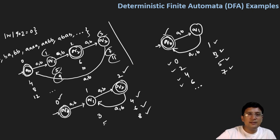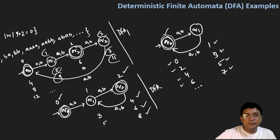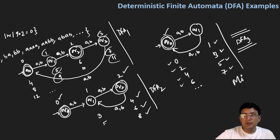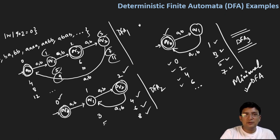So out of the three DFAs — DFA1, DFA2, and DFA3 — DFA3 has the least number of states. We should design the automata with the least number of states because that is more efficient. So DFA3 is the minimal DFA for the given language. We'll see more examples in subsequent lectures. Thanks for watching.